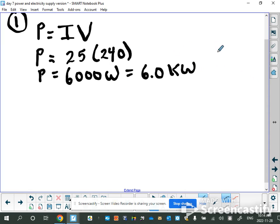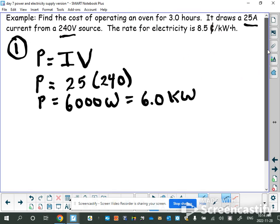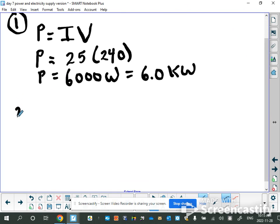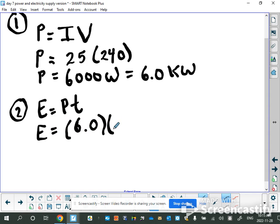Now I want to know the energy used in kilowatt hours. I know the kilowatts and the problem says I'm operating the oven for three hours. I'm going to use the rearranged power equation. The energy used to run my oven is 6 kilowatts times 3 hours, which gives me 18 kilowatt hours. That's how much energy I used overall.